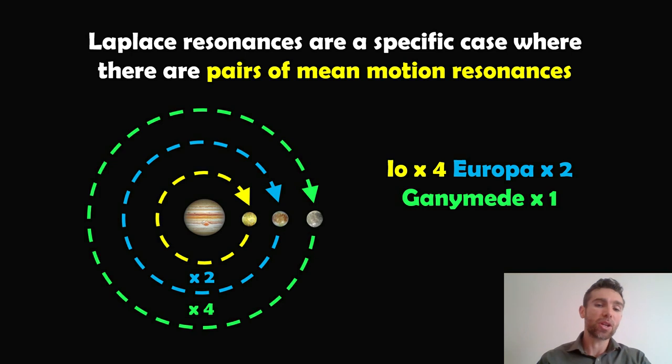As I mentioned previously, to give you an example, the Galilean moons of Jupiter. You've got Io, Europa, and Ganymede here.